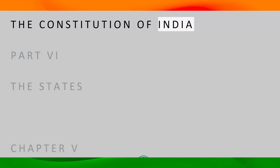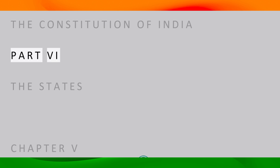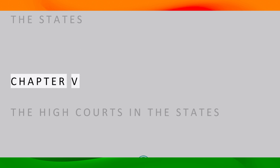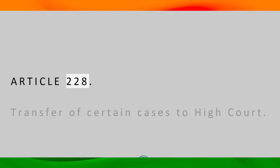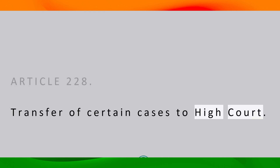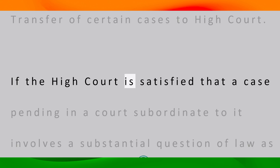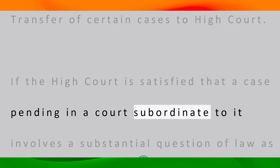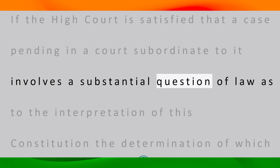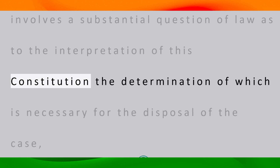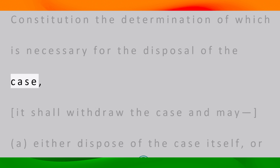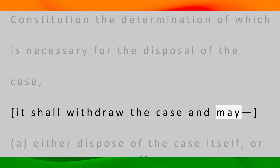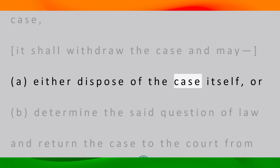The Constitution of India, Part 6 — The States, Chapter 5 — The High Courts in the States, Article 228: Transfer of certain cases to High Court. If the High Court is satisfied that a case pending in a court subordinate to it involves a substantial question of law as to the interpretation of this Constitution, the determination of which is necessary for the disposal of the case, it shall withdraw the case and may: (a) either dispose of the case itself, or